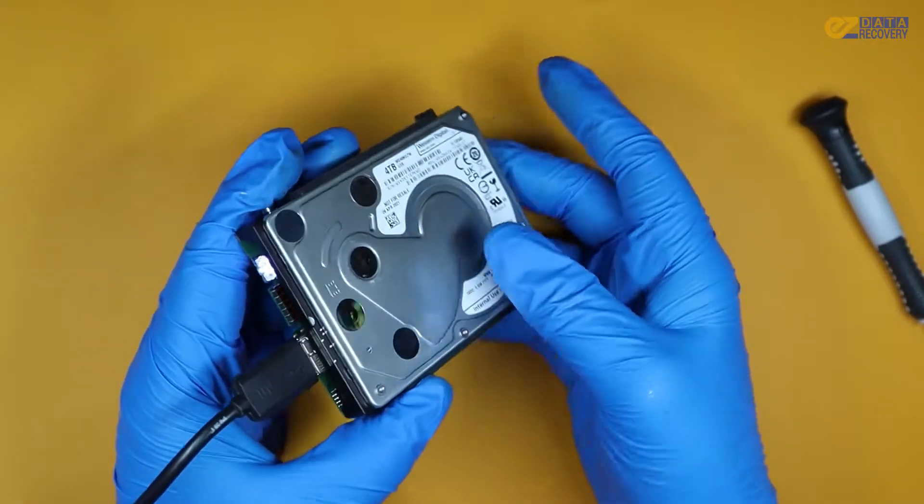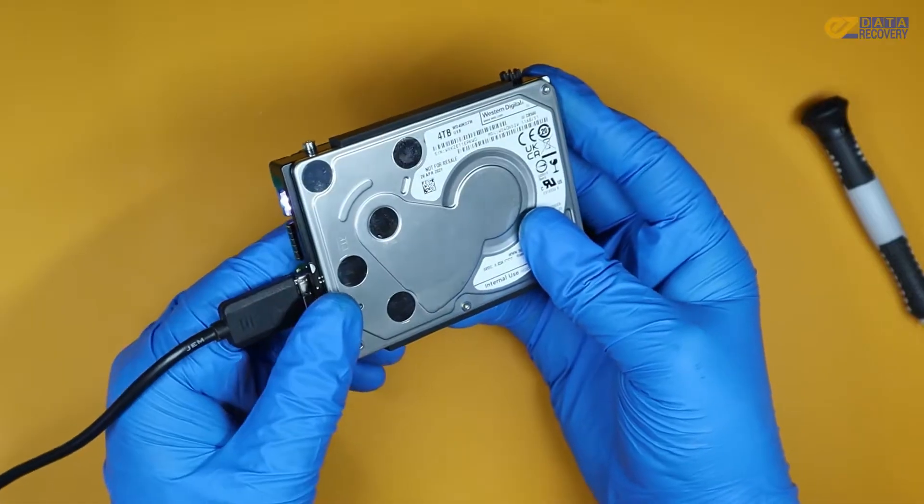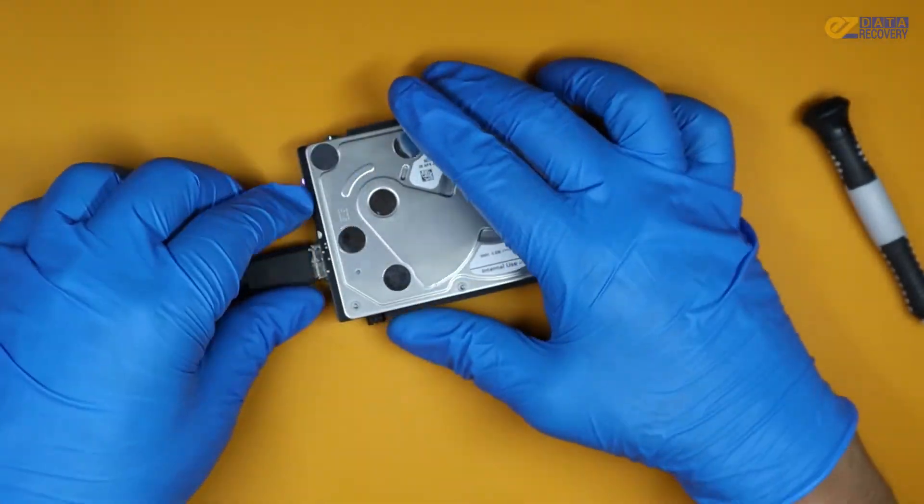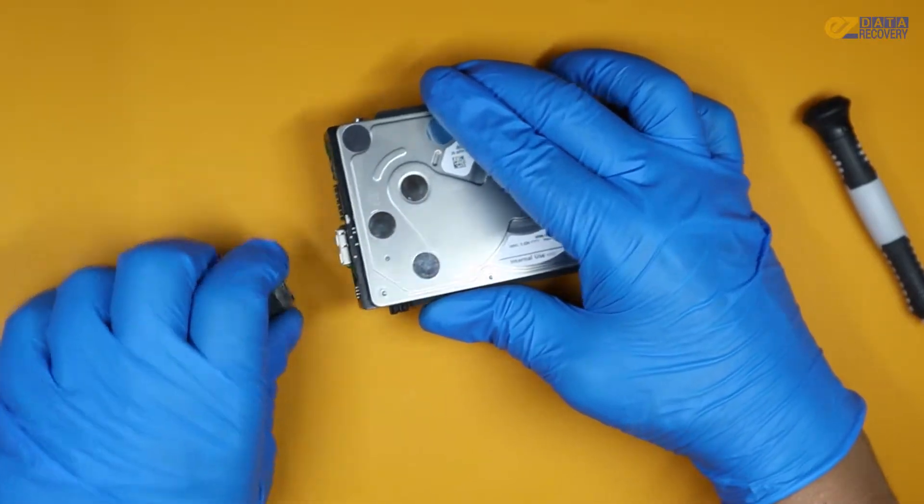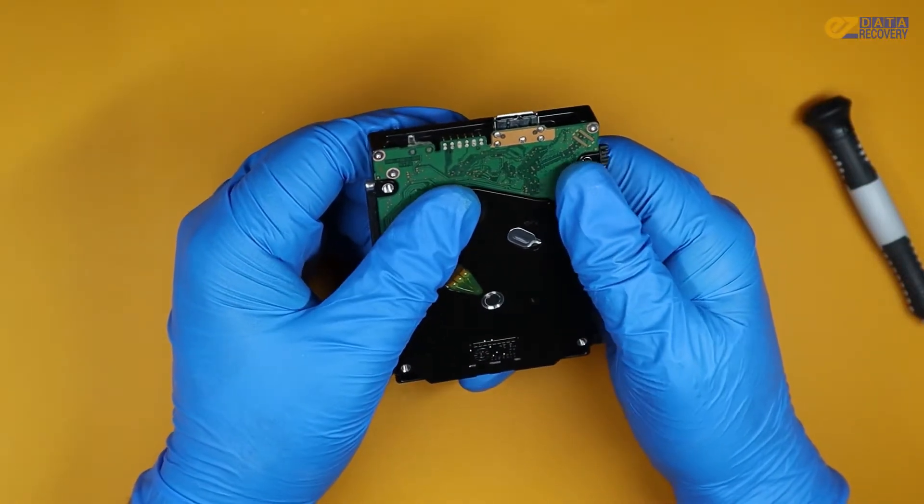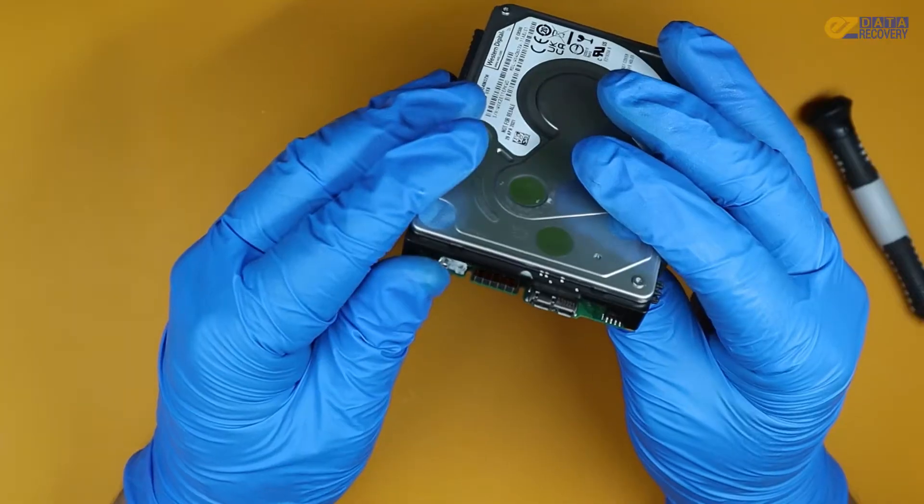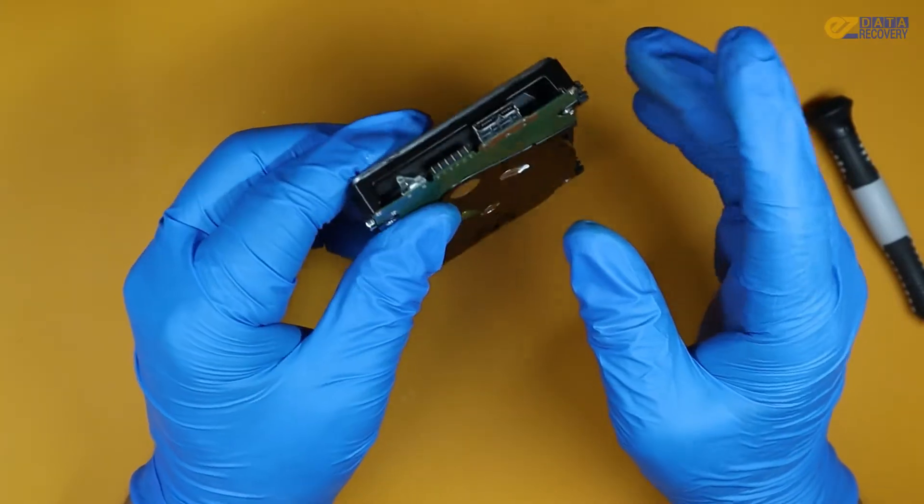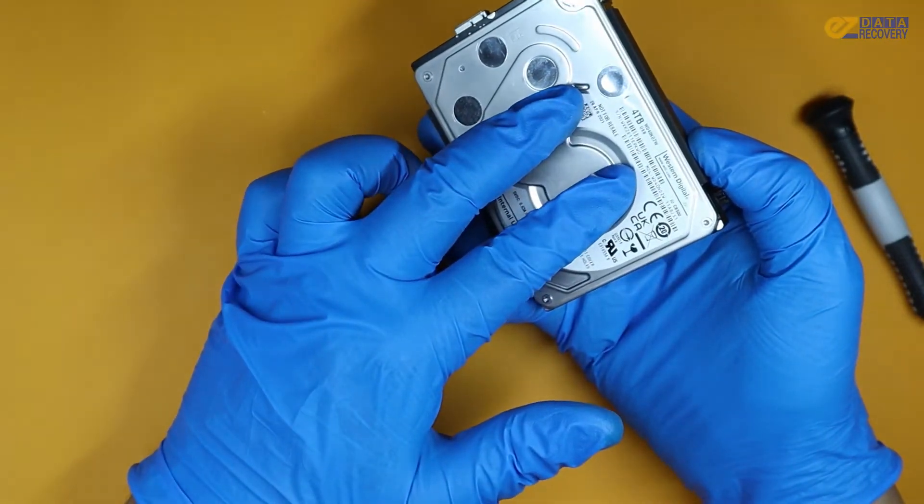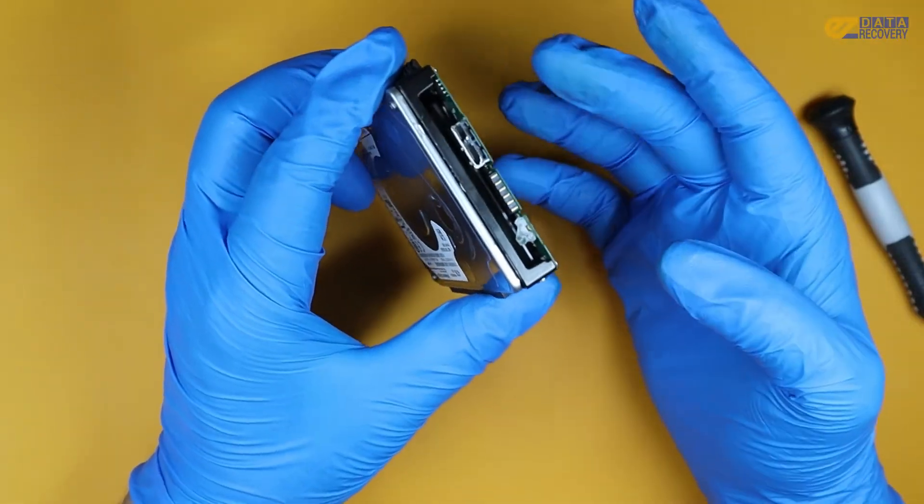Now we will definitely have to recover the data before anything else will probably be failing on this, because most likely there's something that caused this short, something that would have probably destroyed those components. We don't know if anything else might have been damaged inside. There are multiple heads in there and a short could definitely cause those heads to go bad. So let's quickly just recover those data and let's call the customer up and let her know. Thank you for watching and don't forget to like and subscribe.